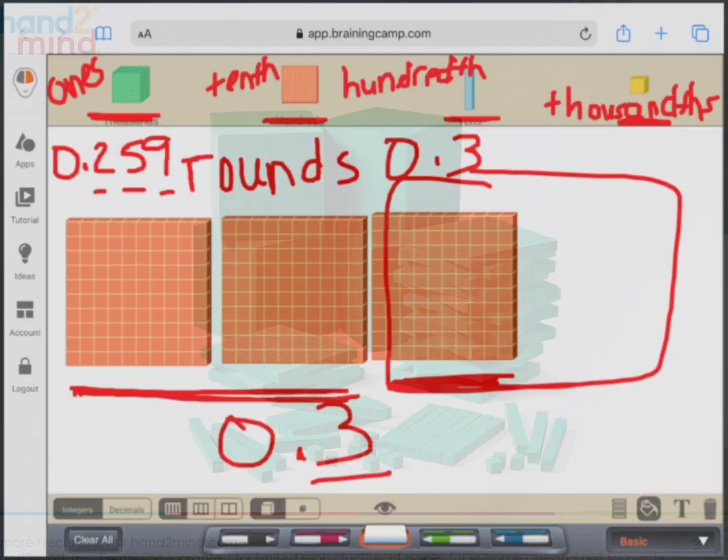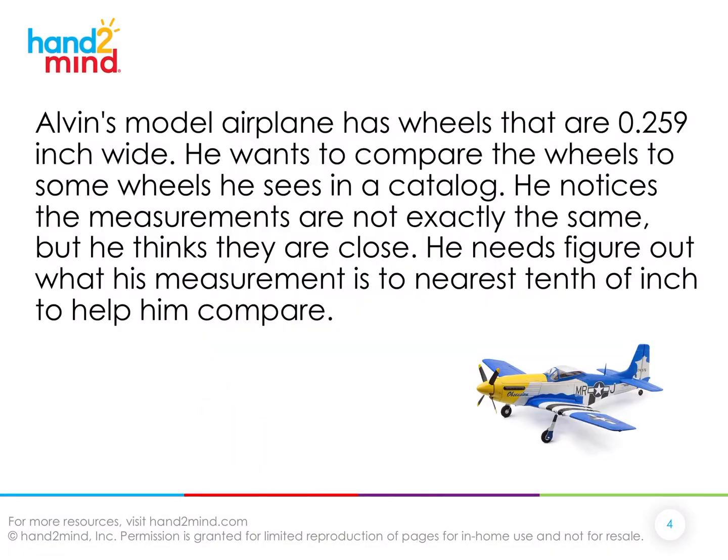Let's go back and let's look at another way that we can look at this. So the models are nice, but a number line can really help us know where that number rounds to, because it really helps us see what it's actually closer to.